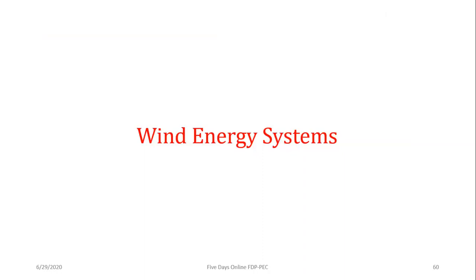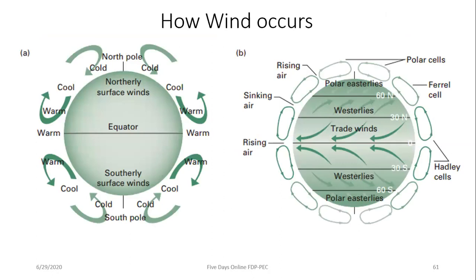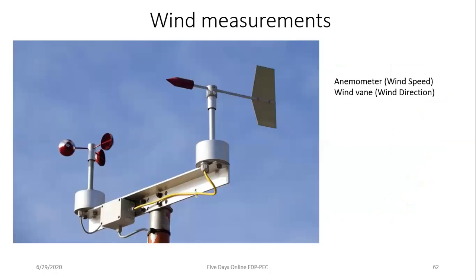Moving to wind energy: wind is generated because the sun heats equatorial regions (±23.45°) more than the poles, creating lower air density near the equator and higher density at the poles. Air moves from high to low density regions, generating wind. The sun is thus the primary energy source for wind as well. An anemometer measures wind speed and a wind vane indicates wind direction — both are critical data for setting up a wind power plant.